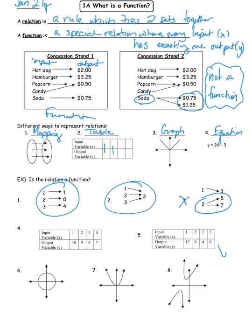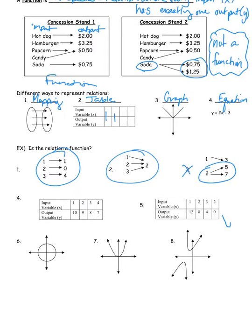Moving on to the table representation: again, these are inputs on one side and outputs on the other. Look at examples four and five — one is a function and one is not. Number five is not a function because the input of two results in two different outputs: eight and zero. Number four has each x value — one, two, three, and four — mapped to a different y value, and only one y value each. So number four is a function.